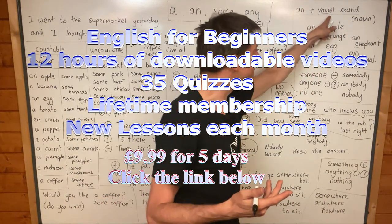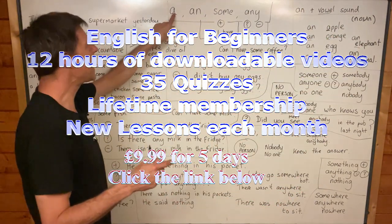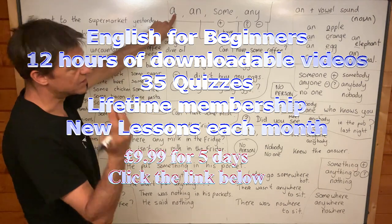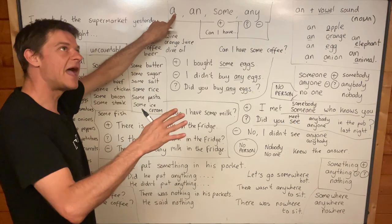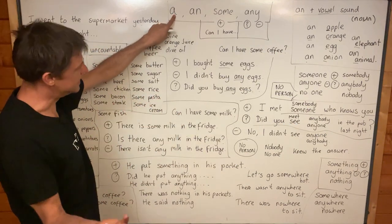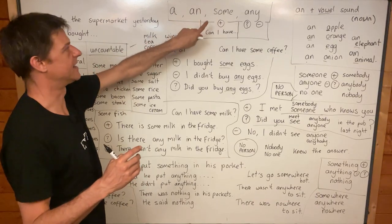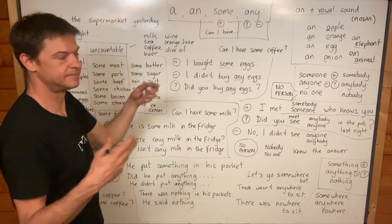An and vowel sound. But a banana, a tomato, a potato, an orange, an egg, an apple.